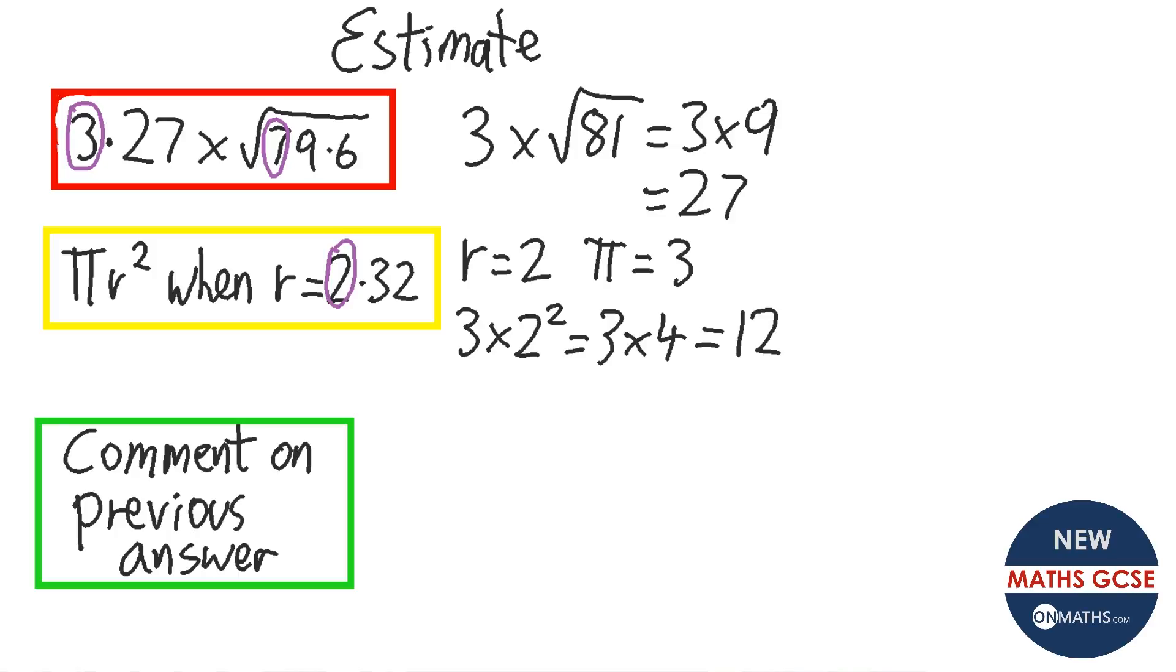Now, new to this GCSE, this new GCSE, is questions that ask you to comment on your answer. Now, what they're looking for here is whether it's an overestimate or an underestimate. Now, if you have a look at both our r and our pi, we took a bigger decimal and made it smaller. We made r instead of 2.32, we made it 2. Instead of pi being 3.14, blah, blah, blah, we made it 3. So we lowered both of the values. Therefore, all they're looking for here is a bit of a sentence maybe, but they're looking for the word underestimate. And that tells them that your answer, the answer to the previous question, was an underestimate. And try and form it as a sentence.